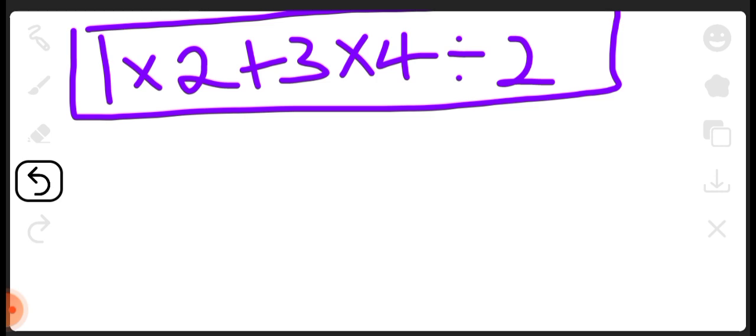We are using BODMAS. BODMAS has Brackets, O which is Of, D which is Division. After bracket we have O which is Of, after Of we have D which is for Division. If you check, we don't have Of here, we don't have brackets, but we have division here.